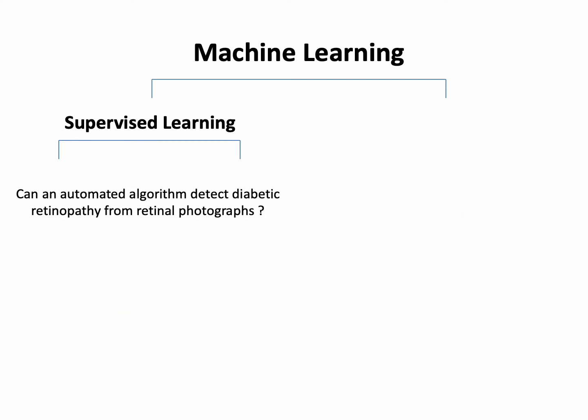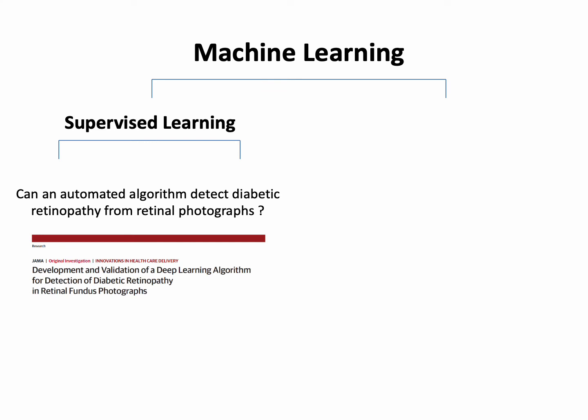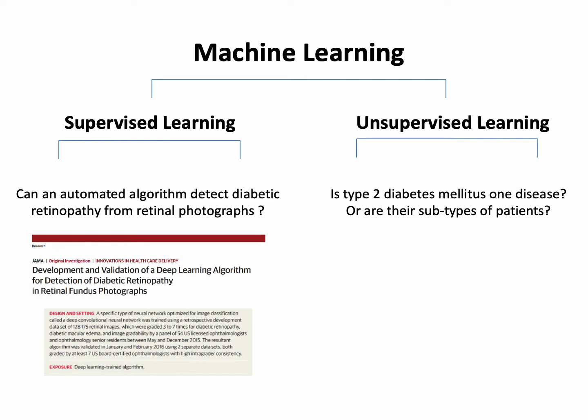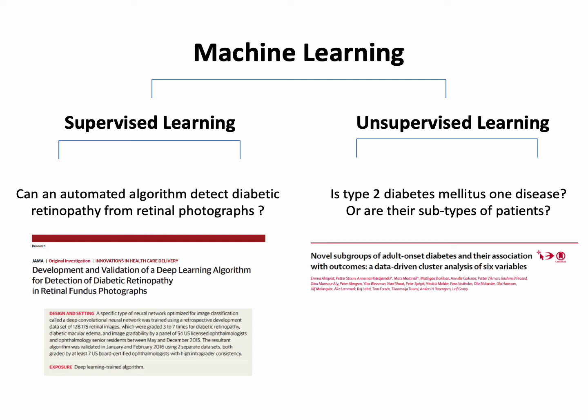We can use some clinical examples. The best possible one for supervised learning is: can an automated algorithm detect diabetic retinopathy from retinal photographs? This was published in JAMA a number of years ago, and they use some fancy deep learning techniques including neural networks. For unsupervised learning, one study sought to determine whether type 2 diabetes is really one disease, or whether there are subtypes or clusters of patients — published in Lancet Endocrinology.